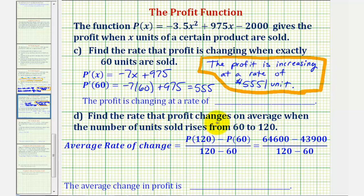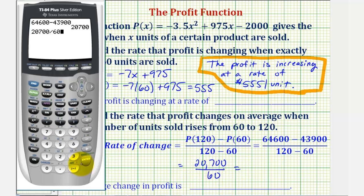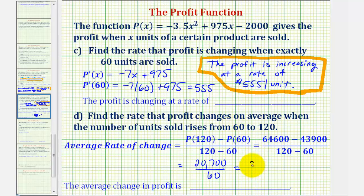For part D, we want to find the rate the profit changes on average when the number of units sold rises from 60 to 120. The average rate of change equals the change in profit divided by the change in units sold: p of 120 minus p of 60, divided by 120 minus 60. This is the slope of the secant line through the points on the profit function at x equals 60 and x equals 120. I've already determined p of 120 and p of 60. The difference gives 20,700 divided by 60, which equals 345. So the average change in profit is $345 per unit.